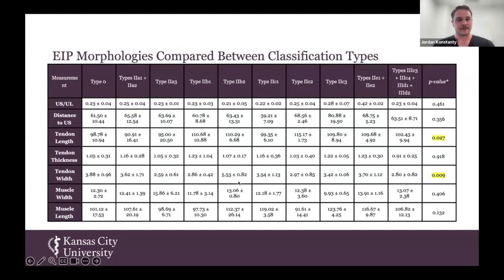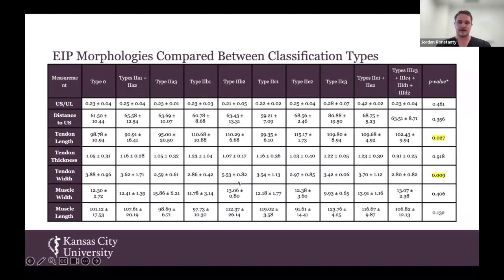In this chart, some of the types have been combined to satisfy post hoc testing requirements, resulting in 10 classification groups. In our present study, types 2A1 and 2A2 demonstrated the shortest tendon lengths, being on average 24.26 millimeters shorter than those of type 2C, which had the longest tendons. Type 2B2 tendons were found to be on average 2.94 millimeters wider than those of type 2A3. These represent the widest and narrowest tendons, and those were the two measurements found to be statistically significant.